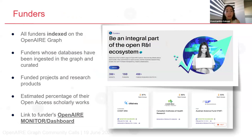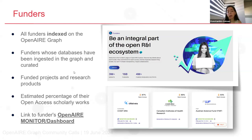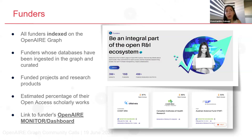Our newest page in OpenAIR Explorer is for viewing all the funders indexed in the OpenAIR Graph — those whose databases have been integrated and are curated. For each funder card, you can see the number of projects and research products, an estimation of the percentage of open access scholarly works, and when available, a link to the funder's OpenAIR Monitor dashboard.